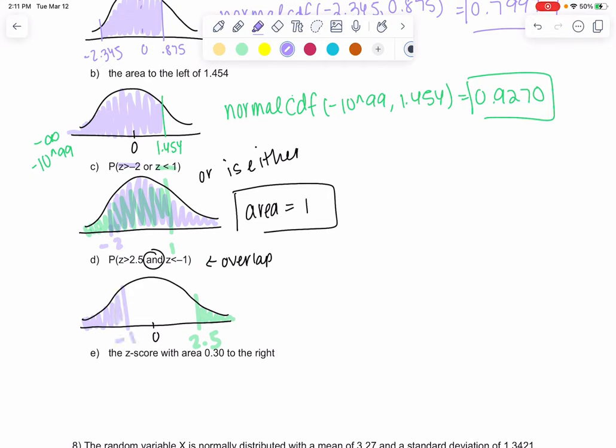And then less than negative 1 is here. If I was doing either or, I would have two pieces. In an or case, we'd find this one plus this one. But because it's an and, I want to find what they have in common, which is nothing. Since they have nothing in common, the area in common would just be 0.